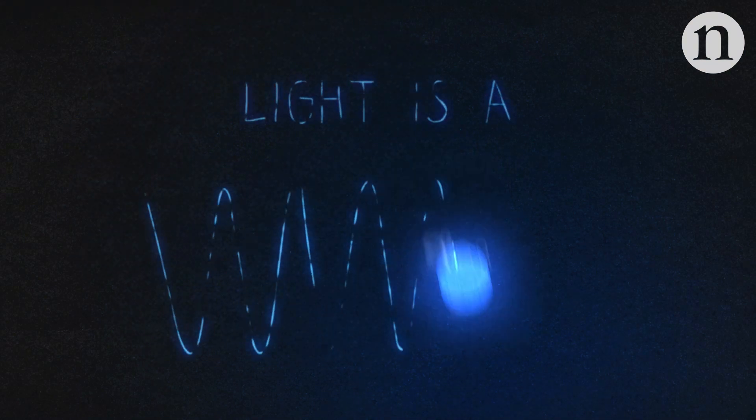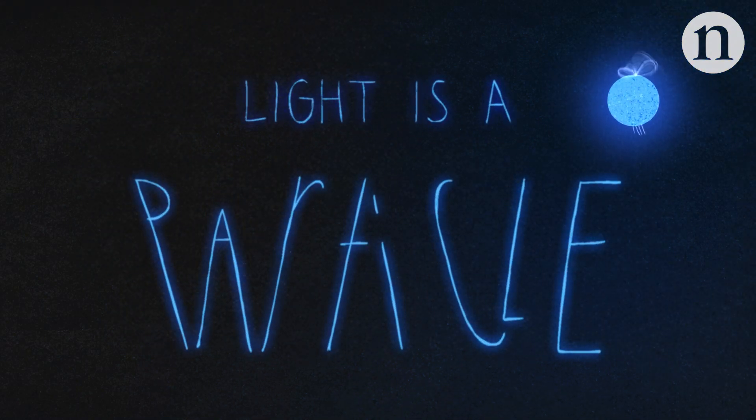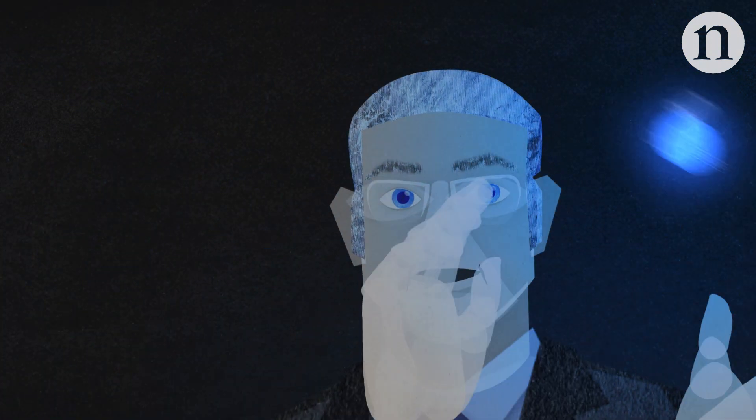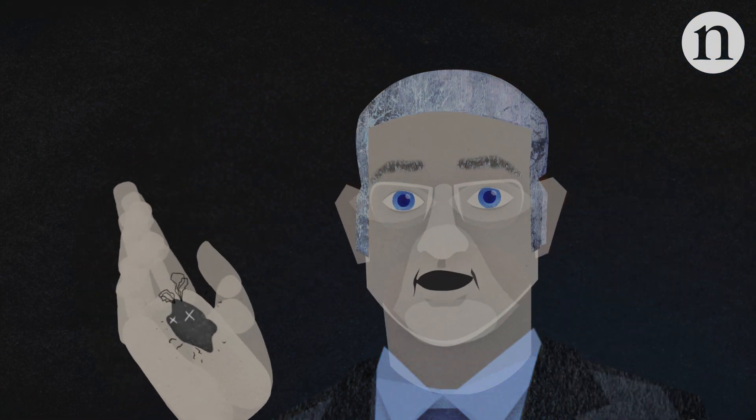The photon is at the same time a wave and a particle. They are very small and very difficult to isolate, so they are very elusive. When you try to work with them, they are very easily destroyed.